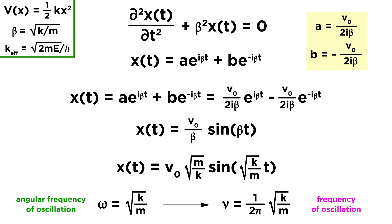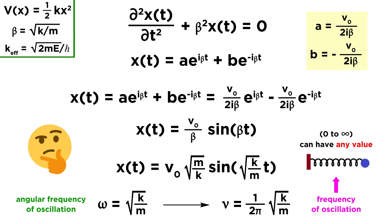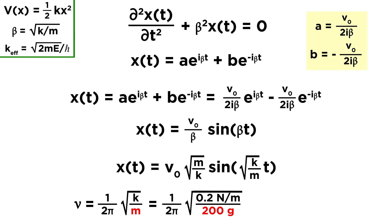The important thing to understand is that our expression for x of t contains a sine function. That means the particle experiences an oscillatory behavior that looks just like a sine wave. Its position depends on its mass, the spring constant k, and the initial velocity V naught. We can define the angular frequency of oscillation, omega, as being equal to the term within the sine function, or root k over m. The frequency of oscillation is simply the angular frequency divided by 2pi, measured in hertz, and just represents the number of oscillations per unit time. Mathematically speaking, the particle can oscillate at any frequency — from zero, which means no oscillation at all or a particle at rest, up to any number you can think of. For example, if the mass is 200 grams and k is 0.2 newtons per meter, then the particle would oscillate at a frequency of 0.16 hertz, which is roughly one full oscillation every six seconds.